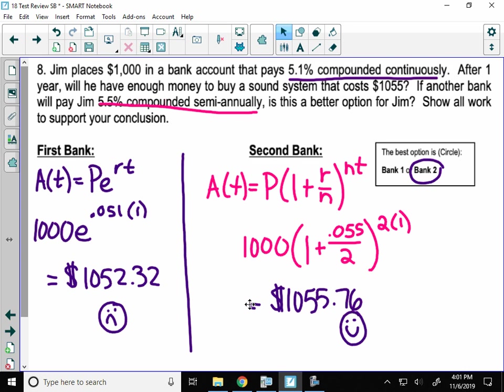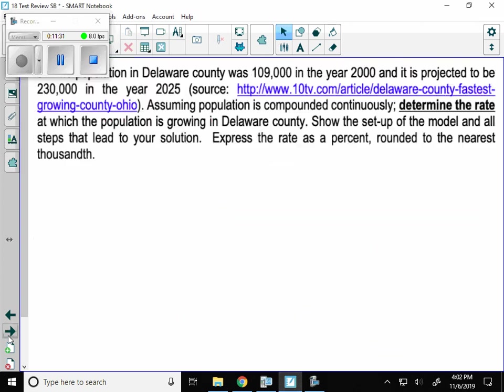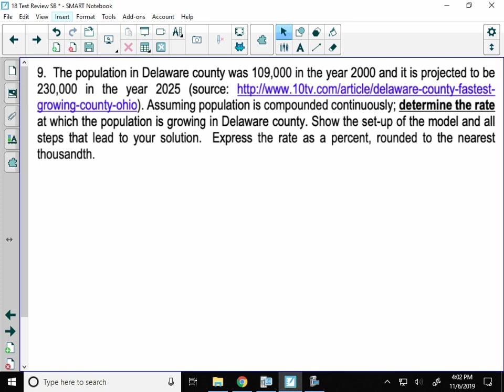Oh, actually, I think I just wanted to go through number eight. Let's see. Nope, I wanted to go through number nine, so let's do number nine here. The population in Delaware County was 109,000 people in the year 2000. That's before some of you were born or right around when you were born. Actually, before all of you were born. None of you were 19 years old. They projected way back in 2000 that by the year 2025, there would be 230,000 people in Delaware County. Assuming population is compounded continuously, people are born all the time. Find the rate that the population is growing in Delaware County.